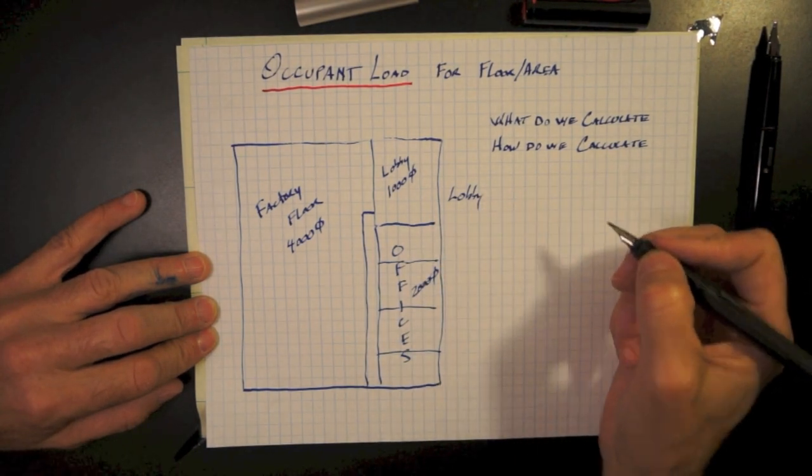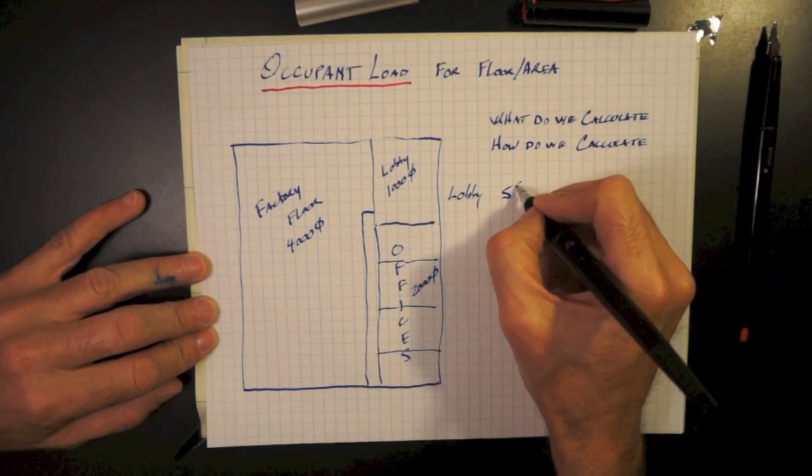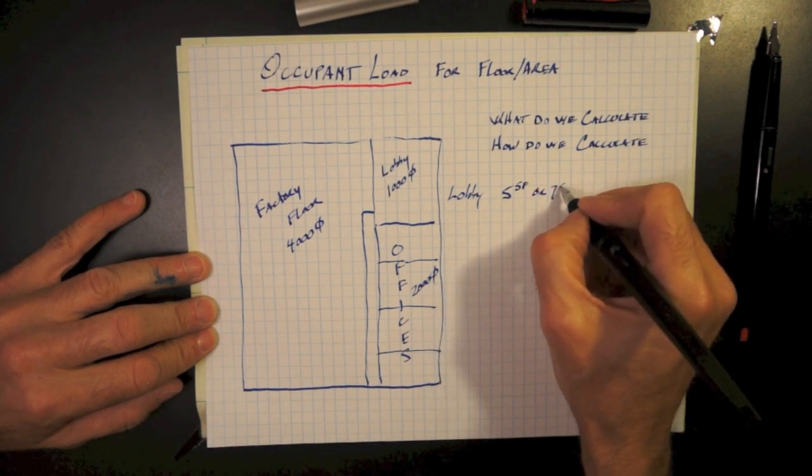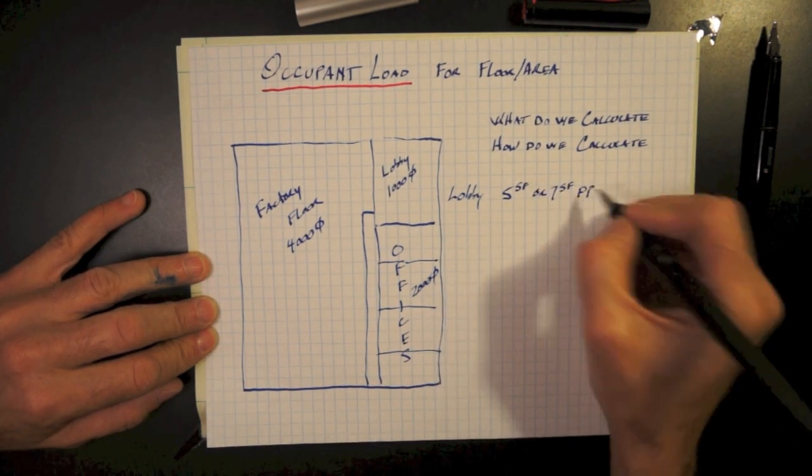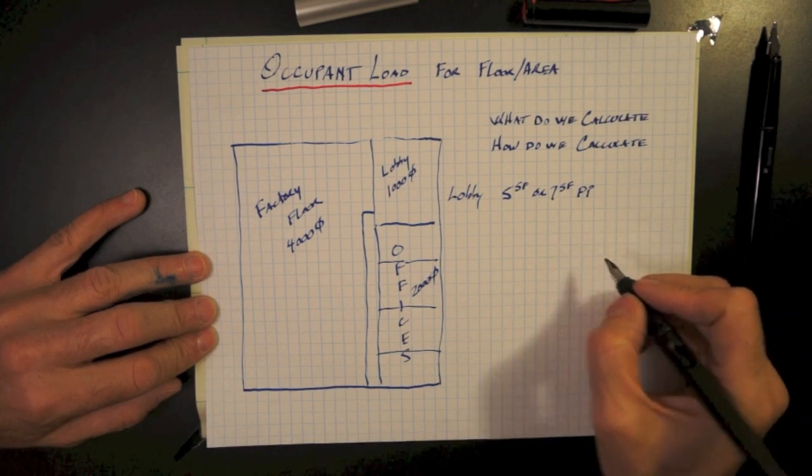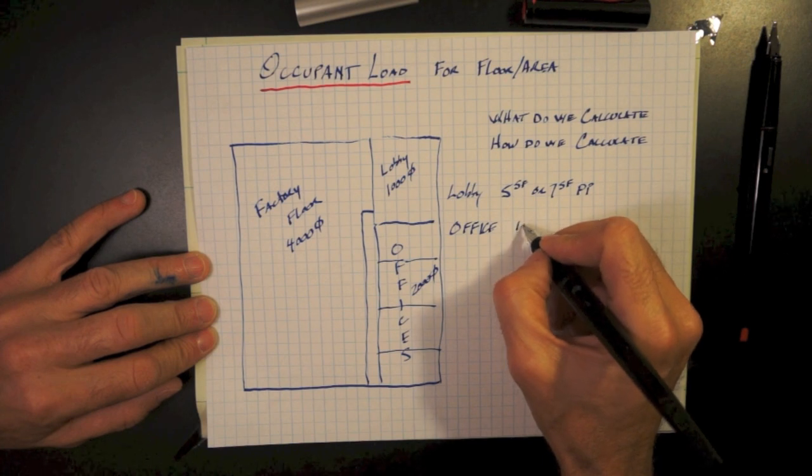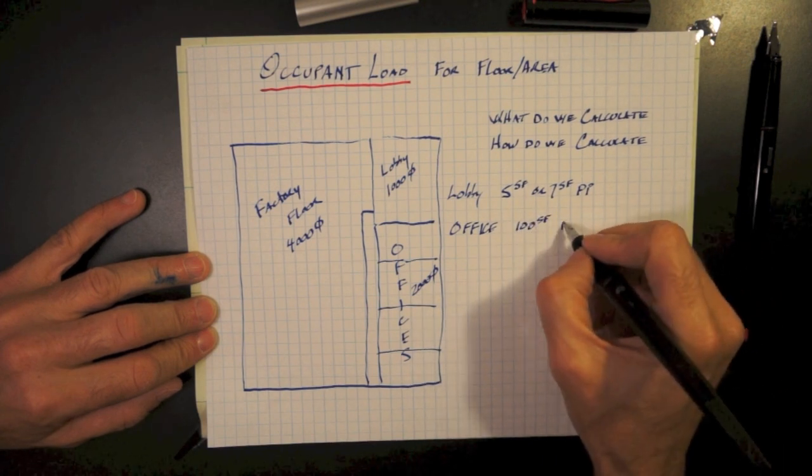The lobby, considered assembly space, could either be 5 square feet per person for standing room only, or 7 square feet per person for tables and chairs. I think the argument could be had for tables and chairs at 15 square feet per person, but we're going to stick with 7 at this time.